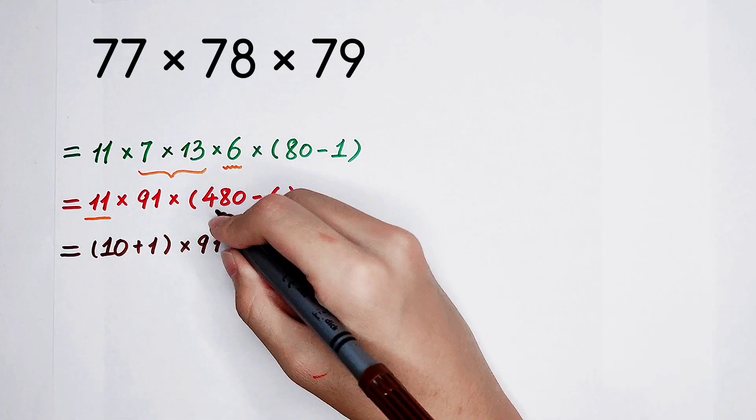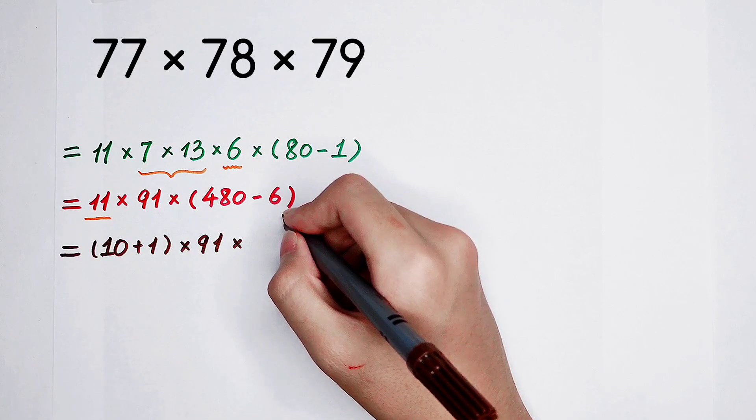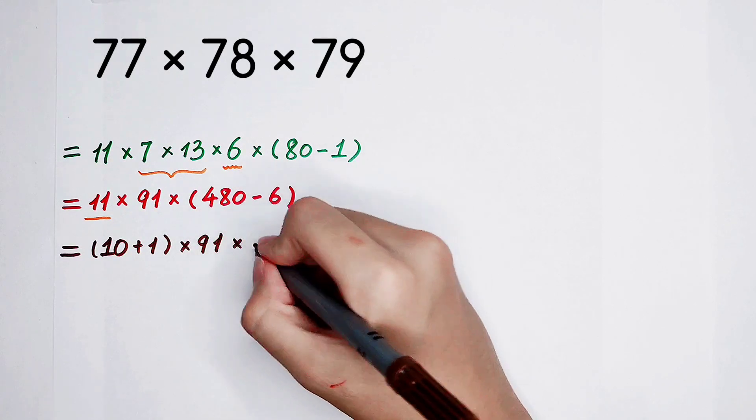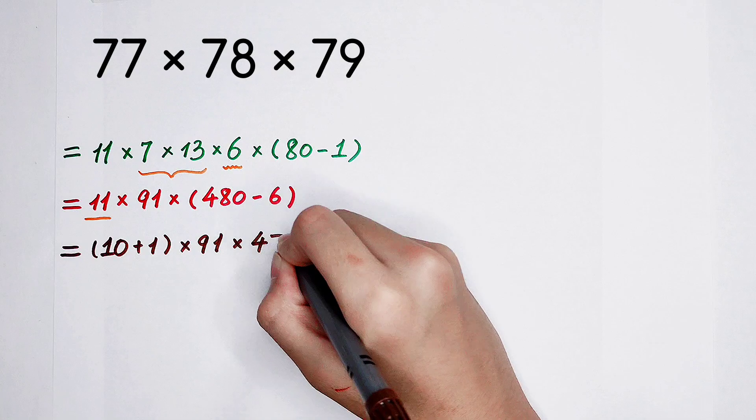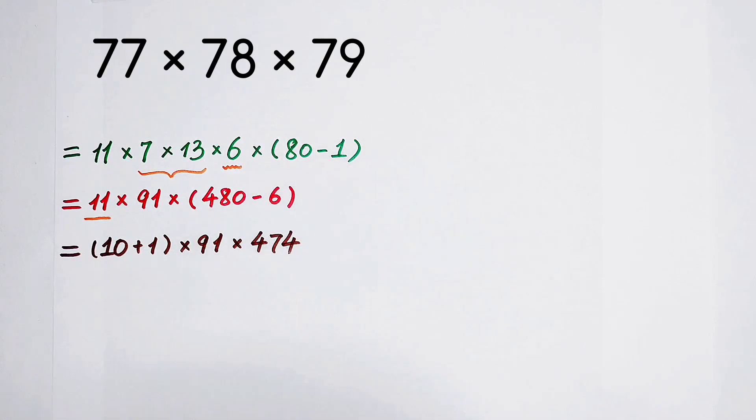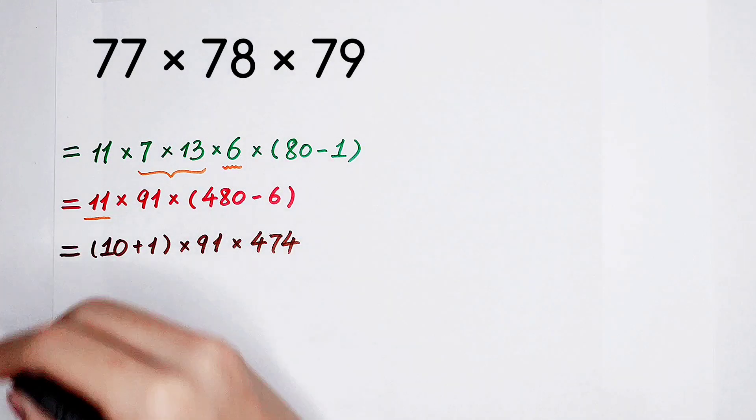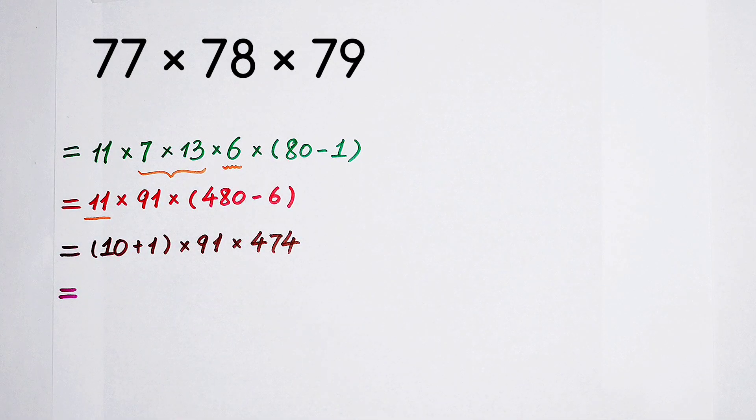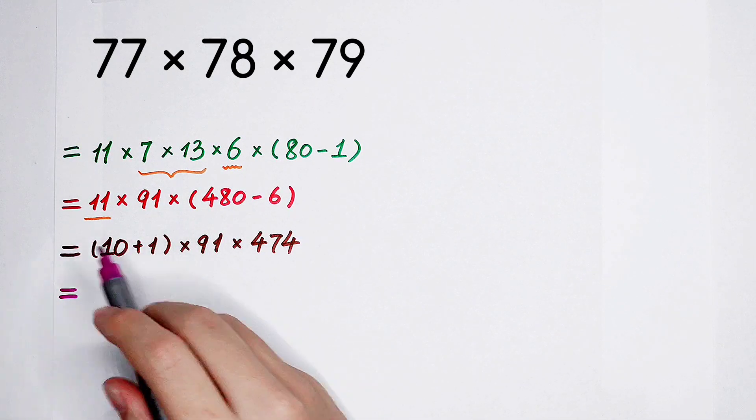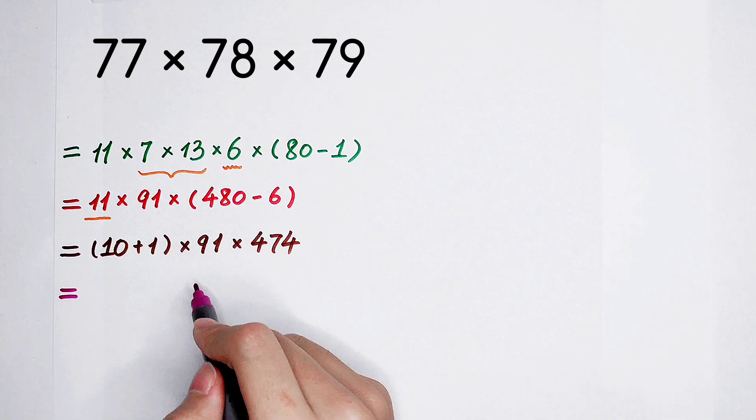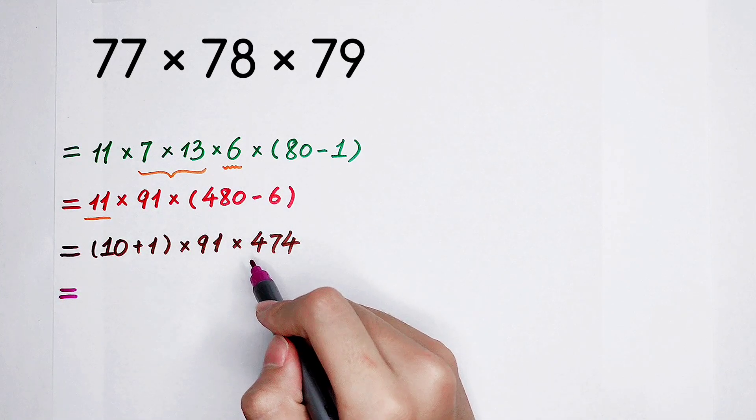And this, calculate it. It is 474. We do the next step together. 10 plus 1 in bracket, then times 91, then times 474.